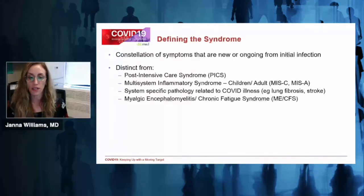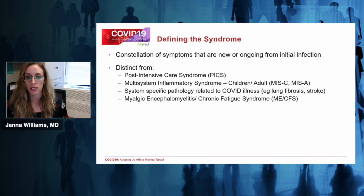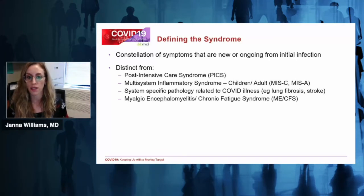Long COVID is also distinct from organ-specific pathology we know happens from COVID illness — for example, lung fibrosis where we understand the direct pathophysiological link — as well as distinct from chronic fatigue syndrome or myalgic encephalomyelitis. We're still working to define the syndrome, and there may be sub-phenotypes or subgroups within it. Right now, it remains an umbrella catch-all term.